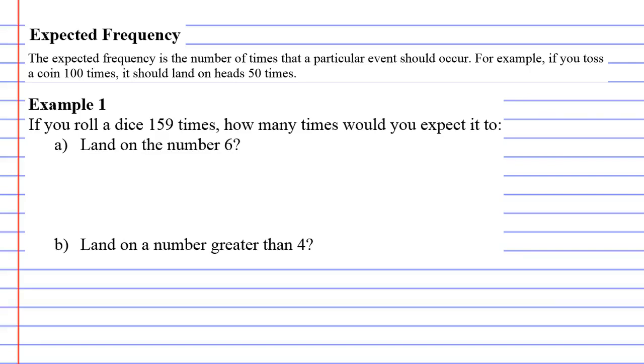Expected frequency is the number of times that a particular event should occur. For example, if we toss a coin 100 times, how many times do you expect it to land on heads? We'd expect it to land on heads 50 out of those 100 times.